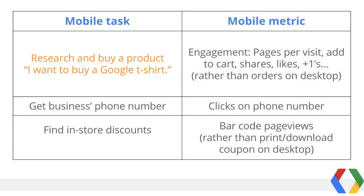For instance, if a user wants to research and buy a product like a Google t-shirt, we could include mobile metrics of engagement — counting micro-conversions like pages per visit, add to cart, etc. — rather than just orders as we might do for desktop. Or if a common mobile task is to obtain a business's phone number, the metric can be measured by clicks on the phone number. Or take the mobile task to find in-store discounts — on mobile, the conversion may be barcode scans, rather than printing or downloading coupons.